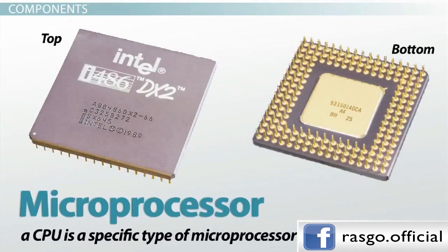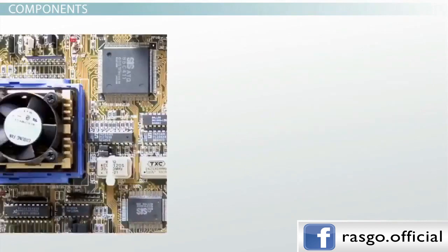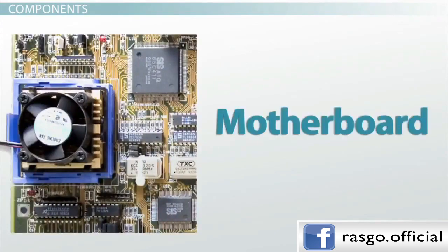The individual components of a CPU have become so integrated that you can't even recognize them from the outside. This CPU is about 2 inches by 2 inches in size. CPUs are located on the motherboard. Motherboards have a socket for this, which is specific for a certain type of processor. A CPU gets very hot and therefore needs its own cooling system in the form of a heatsink and/or fan.